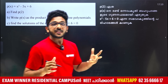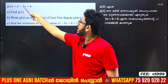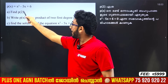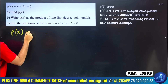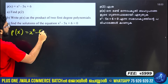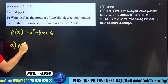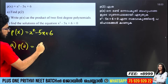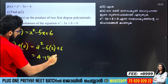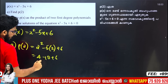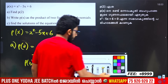You have to work with a polynomial: this is second degree — x² minus 5x plus 6. If you have the first degree, it is P of 2. You write P of x equals x² minus 5x plus 6. Now find P of 2: substitute x equals 2 — 2² minus 5 times 2 plus 6 equals 4 minus 10 plus 6 equals 0. So P of 2 equals 0.